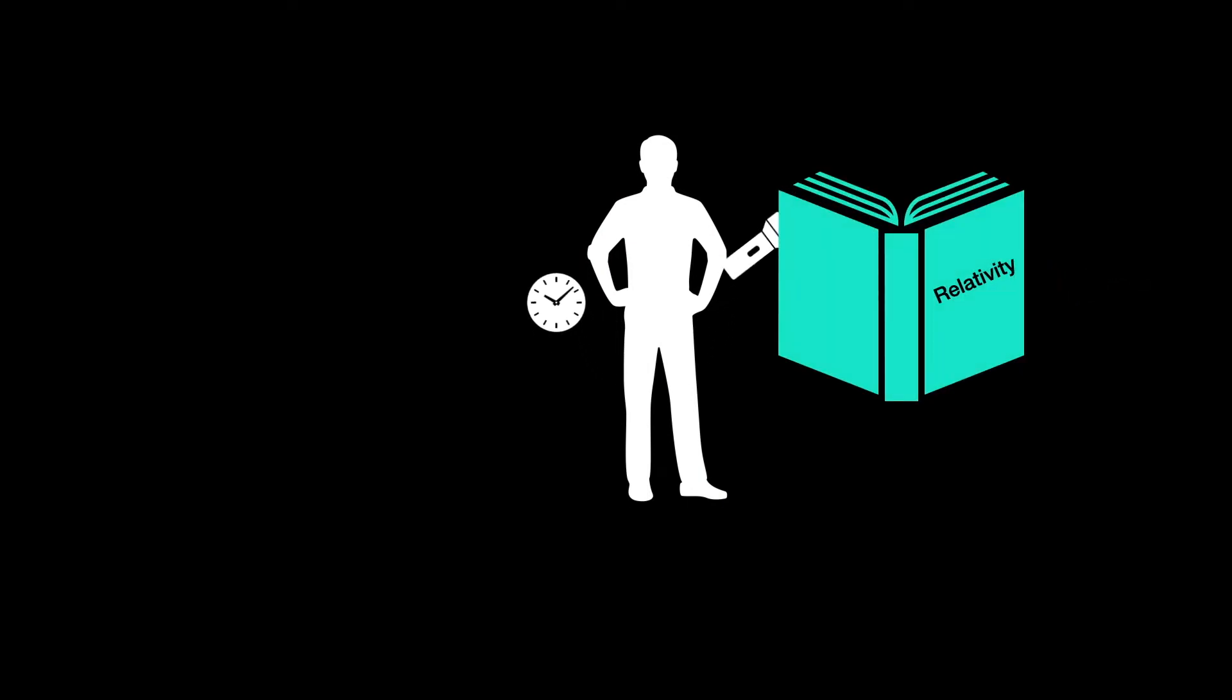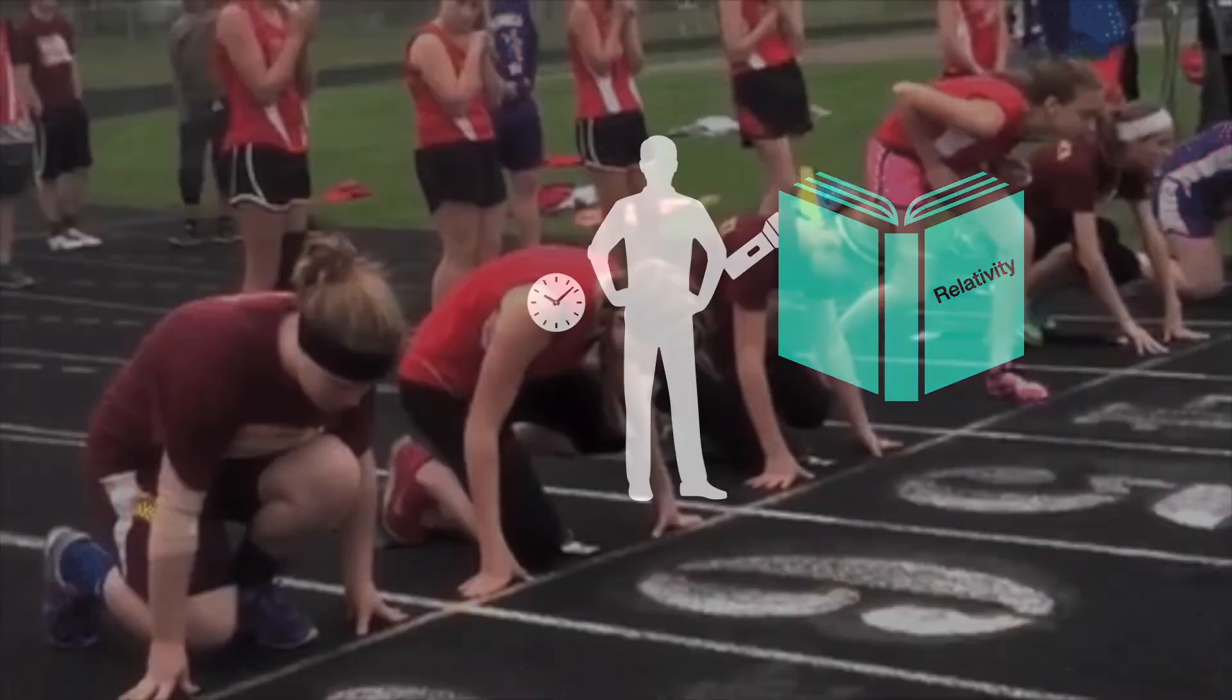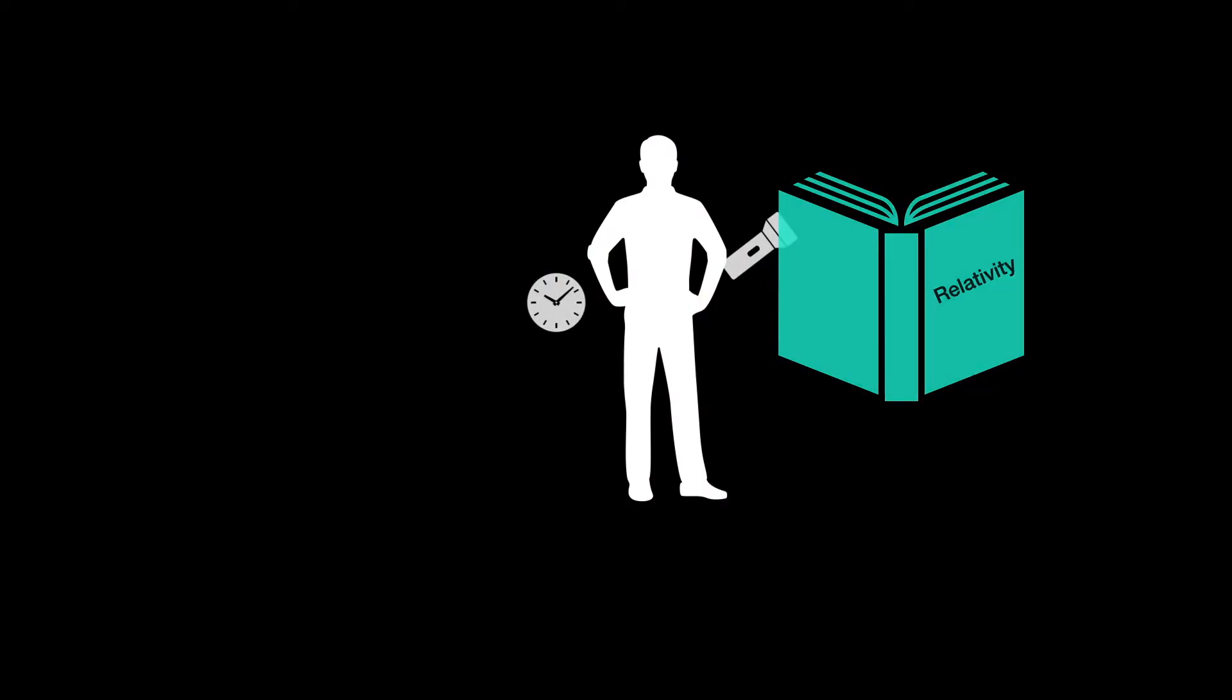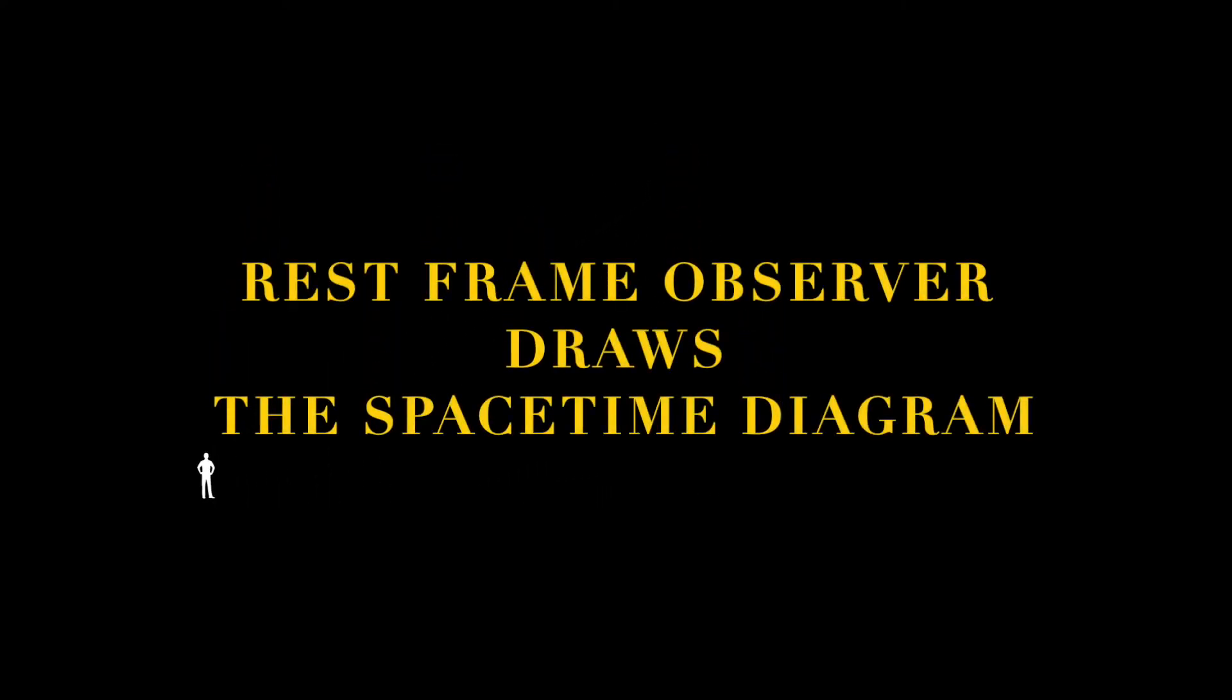We know that any motion is relative. So, we must specify at the outset that the guy drawing the space-time diagram is doing all the observations to assign coordinate values to events here. So, we see everything from this observer's perspective and refer to him as the rest frame observer. We name his frame S0 and assume that it is an inertial one.